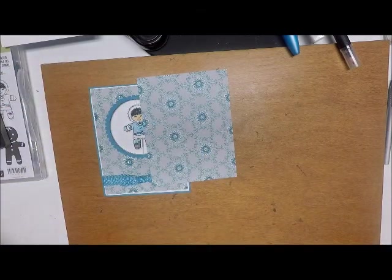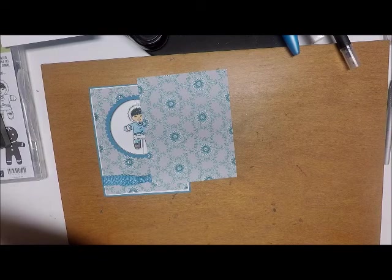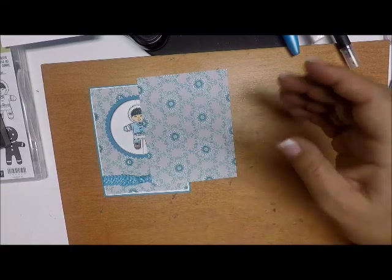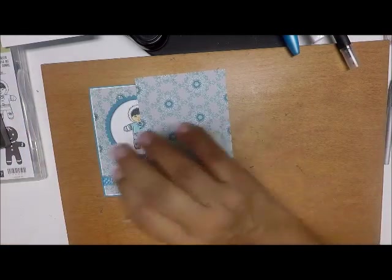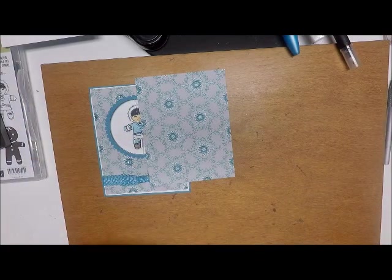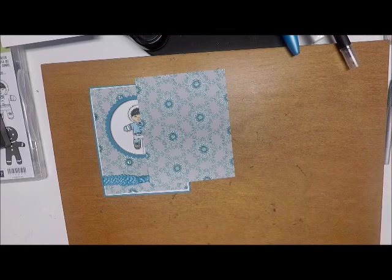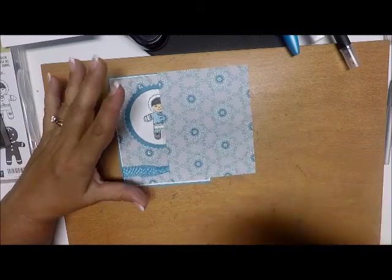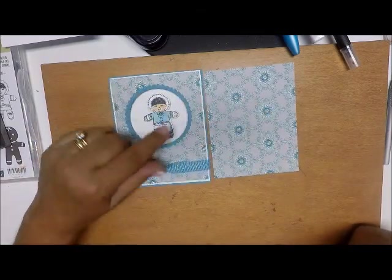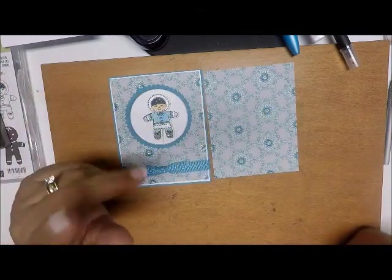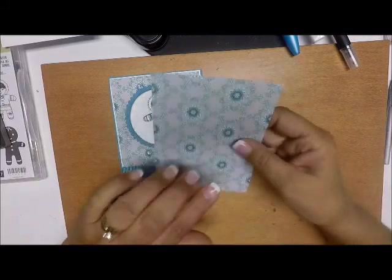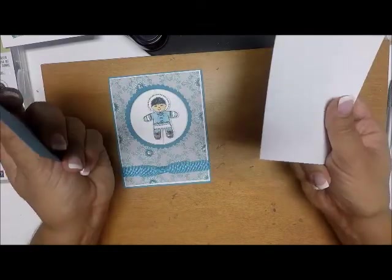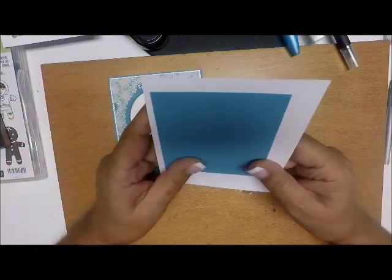Then I have a piece of designer series paper, this is from an old Christmas set called winter frost specialty pack. If you don't have this one you can use any kind of winter paper, just adjust your colors. I picked this one because it had snowflakes on it and little Eskimos come from where there is lots of snow. This is cut at four by five and a quarter. Then we need a scrap of white and marina mist.